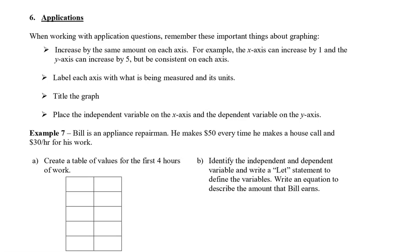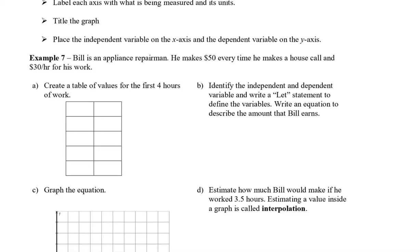So let's take a look at an example. Bill is an appliance repairman. He makes $50 every time he makes a house call, and $30 per hour for his work. So even when he just goes to the house, he's going to make $50 right away. Now we're actually going to start with part b first. So identify the independent and dependent variable and write a let statement to define the variables. We're going to let h equal the number of hours worked, and that's our independent variable. And then we're going to let A equal the amount earned, and that is the dependent variable, because the amount earned depends on how many hours are worked.